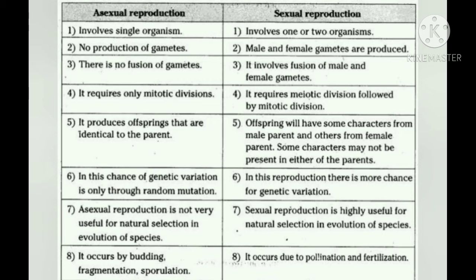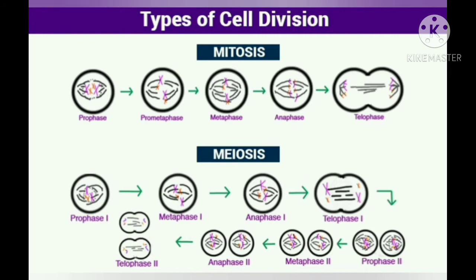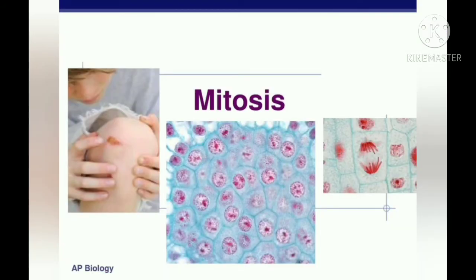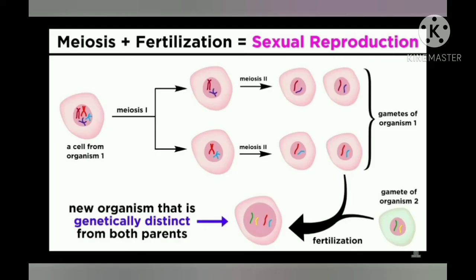Asexual Reproduction requires only mitotic divisions. There are two types of cell divisions: mitosis and meiosis. Mitosis is a cell division useful for growth — for an organism to grow, for cell numbers to increase, or for producing new cells after injury. Meiosis occurs only during the formation of gametes — for example, when sperms are produced in the testes or ovum in the ovaries, meiosis takes place.